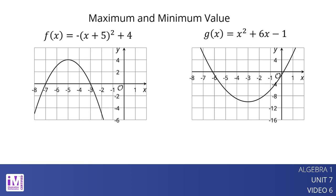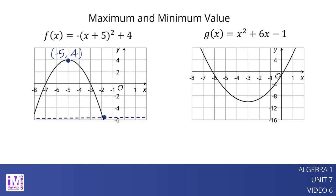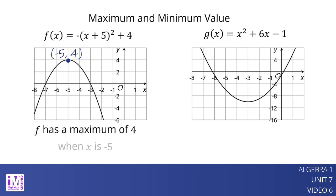The vertex of f is (-5, 4), and the graph is a u-shape that opens downward. No other points on the graph of f are higher than (-5, 4). So we can say that f has a maximum of 4, and that this occurs when x is negative 5.